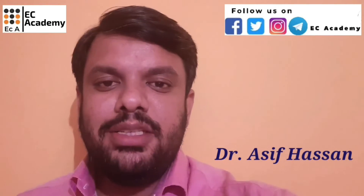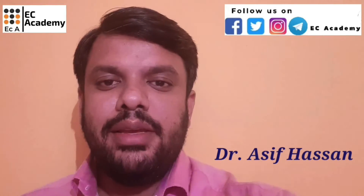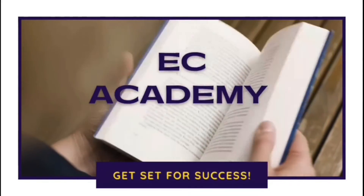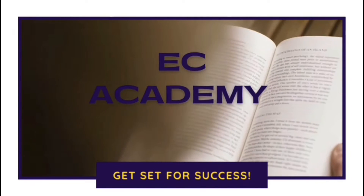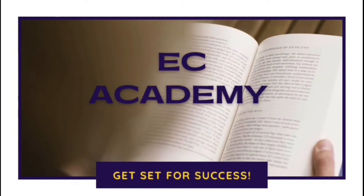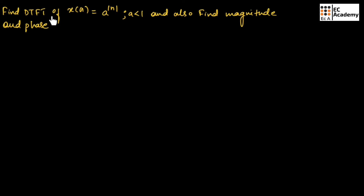Hello friends, welcome to EC Academy. In this lecture, let us understand a problem to find the DTFT. Here we need to find the DTFT of the given sequence x(n), where |a| is less than 1, and also we need to find the magnitude and phase.